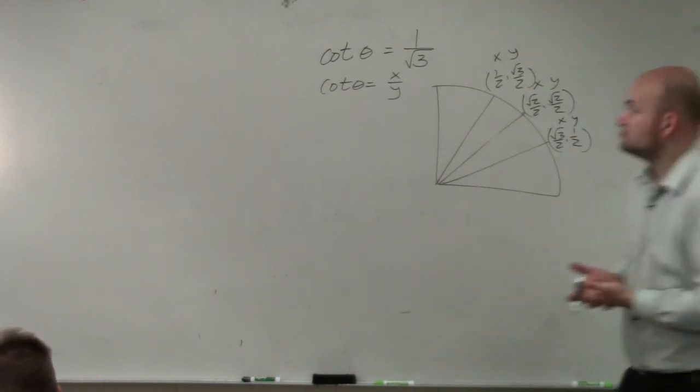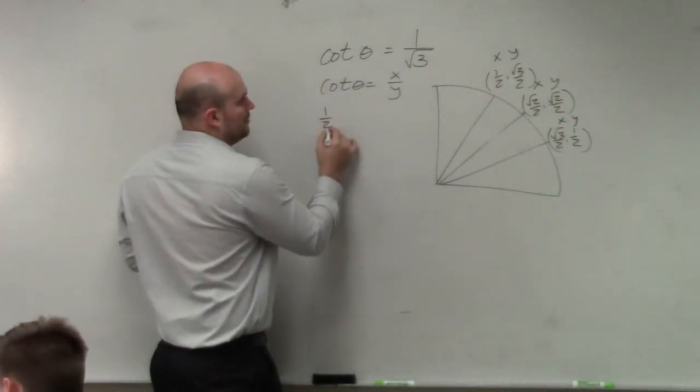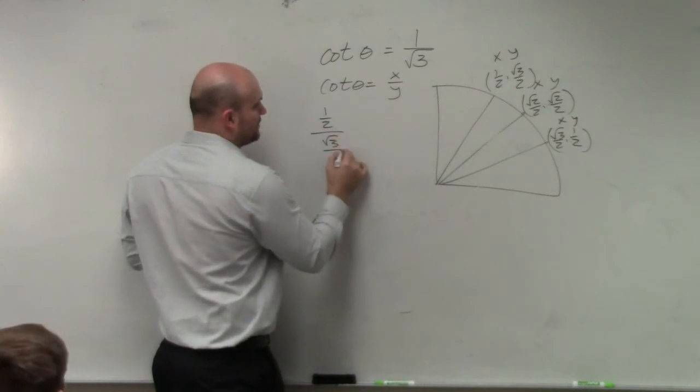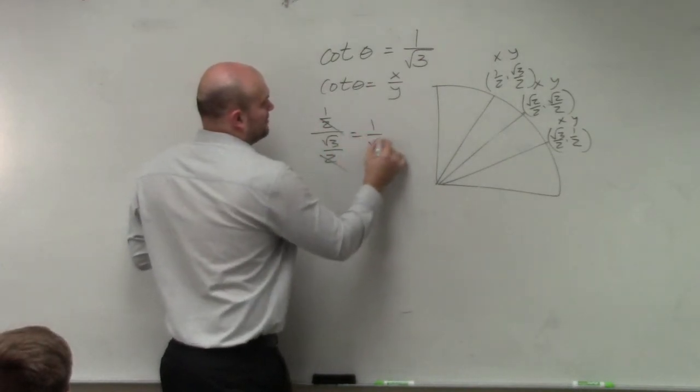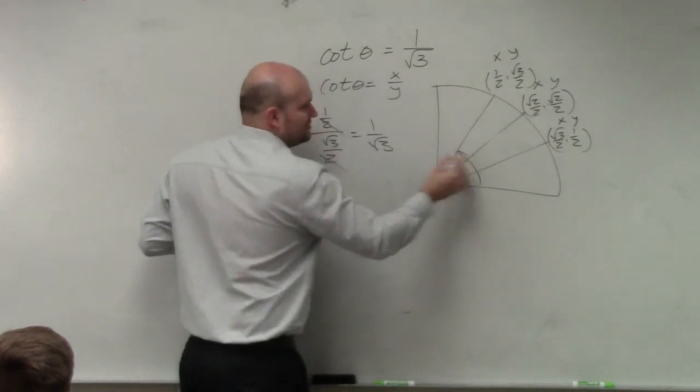If nothing's coming to you, why don't we try each one? (1/2) / (√3/2)... First one I tried, got it! So what was that angle? It's 60 degrees, and in radians, it is π/3. Theta equals π/3.